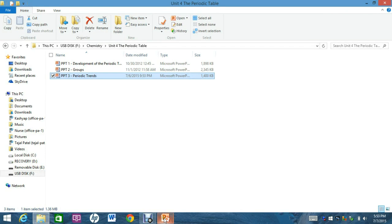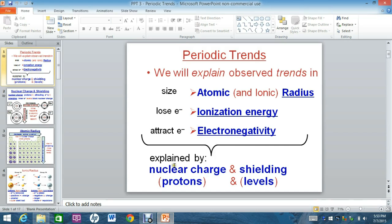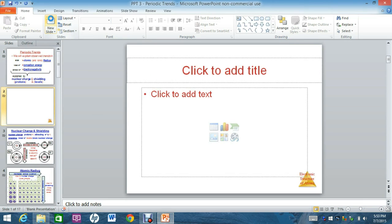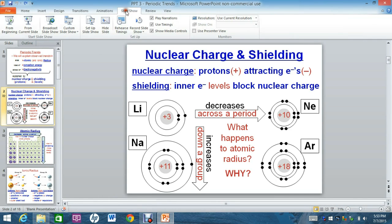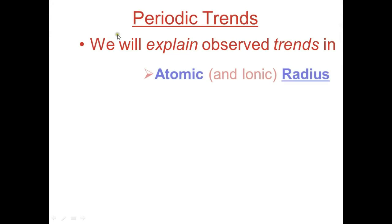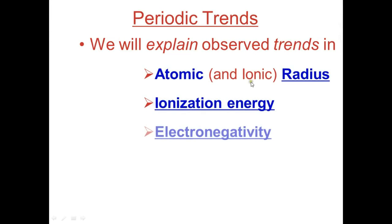Hello, this is Miraj Patel and today we're going to be talking about periodic trends. This will be the last video for Unit 4. We're going to be talking about three periodic trends: atomic radius, ionization energy, and electronegativity.